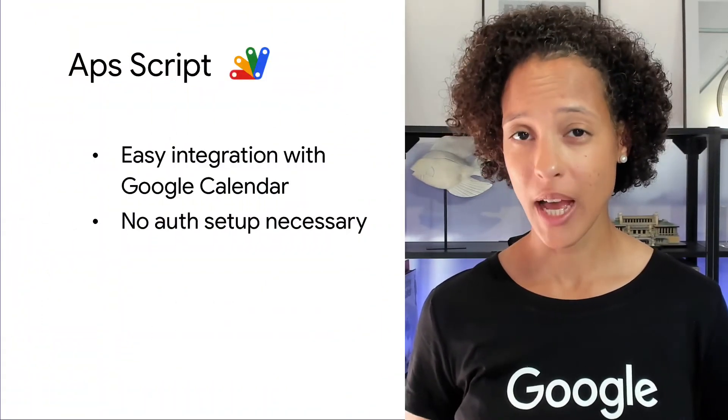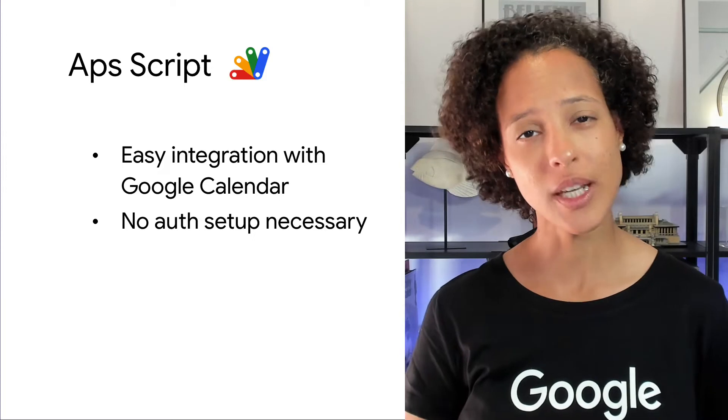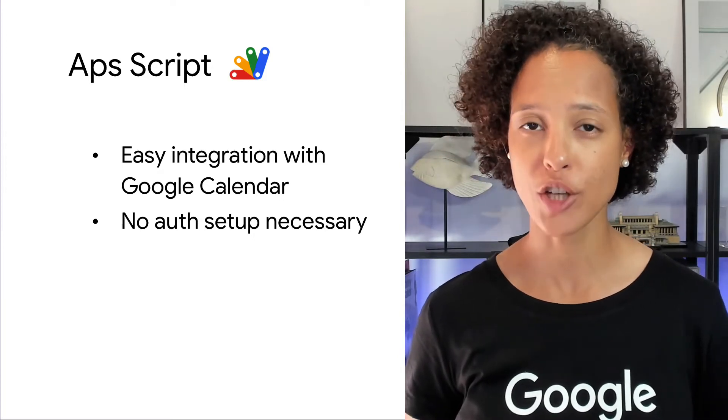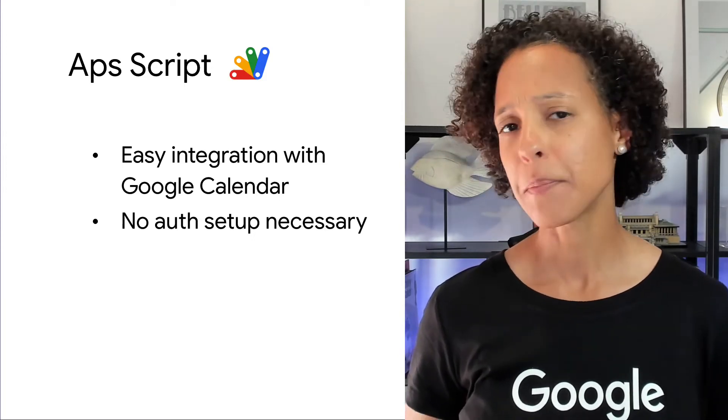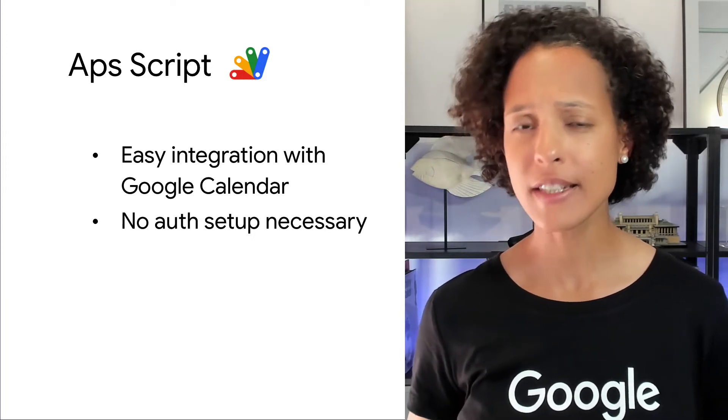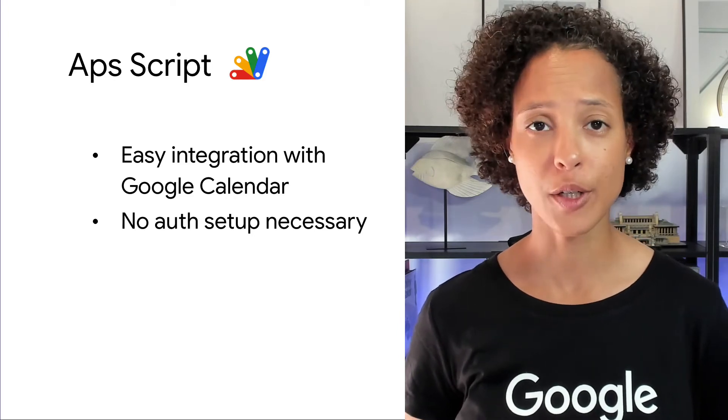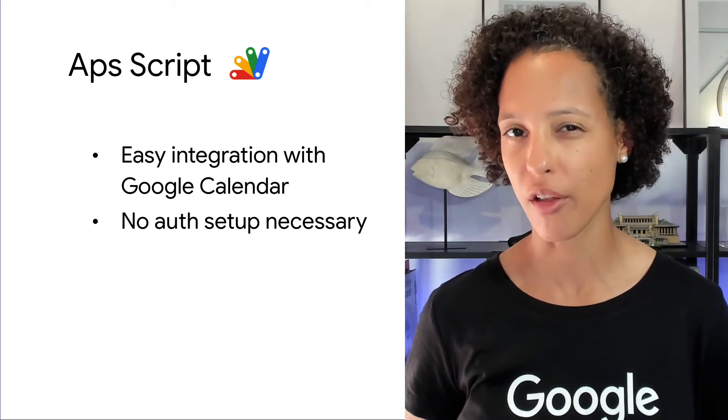Let's say you're building a vacation planner chat app for you and your team of five. You want your chat app to programmatically access the calendar of all of the team members. For such an app, choosing Apps Script for your chat app's logic is a good choice because it's easy to integrate with Google Calendar, especially in terms of auth.